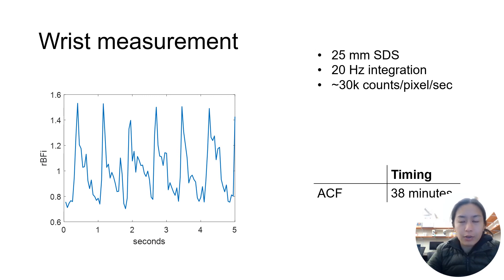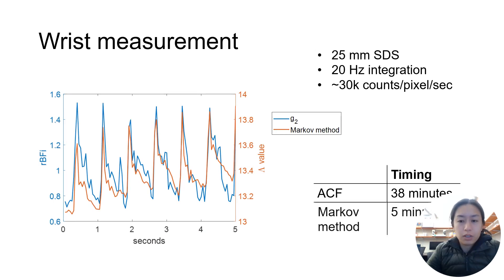Here we have a wrist measurement at 25mm source detector separation, 20Hz integration, and around 30,000 counts per pixel per second. Acquired with the raw photon detection event mode, the pulsatile blood flow here is clearly visible.